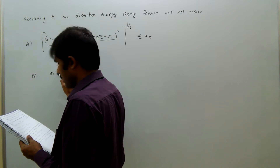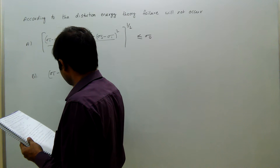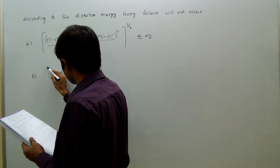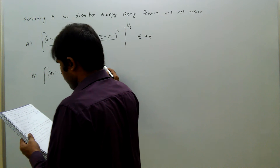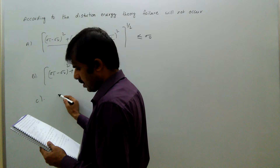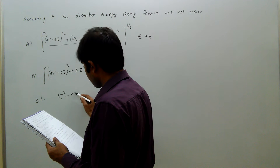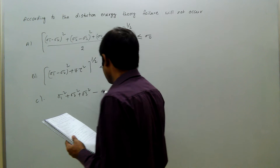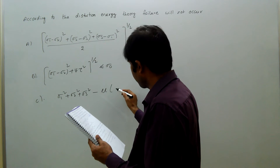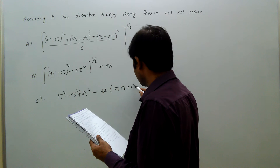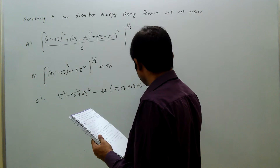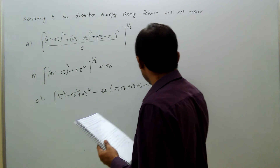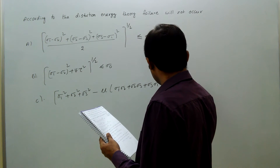(B) sigma 1 minus sigma 2 whole square plus 4 tau square, to the power of half, less than or equal to sigma 0. (C) sigma 1 square plus sigma 2 square plus sigma 3 square minus mu times of sigma 1 sigma 2 plus sigma 2 sigma 3 plus sigma 3 sigma 1, whole to the power of half, less than or equal to sigma 0.